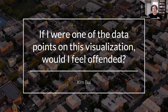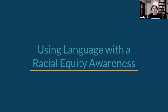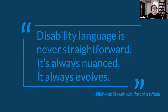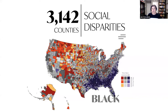Let me talk about a few practical things you can use in your work starting today. The first is using language with an equitable approach. One thing many of us think about is using people-first language — we might want to say 'people with disabilities' rather than 'disabled people.' Of course, people-first language is not generalizable to every group; some communities don't use it. But in general, we might want to use people-first language. The challenge with language is that it's not straightforward — it's always nuanced and always evolving. Words and terms we use today may not be ones we use tomorrow.